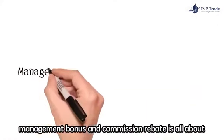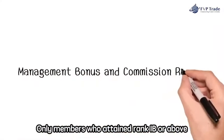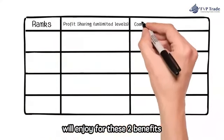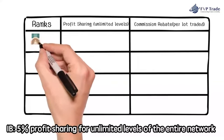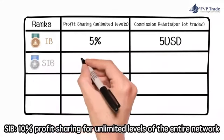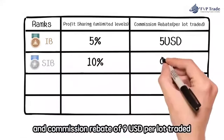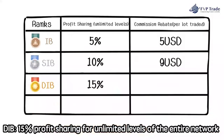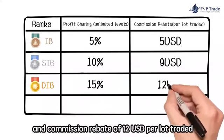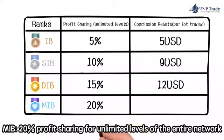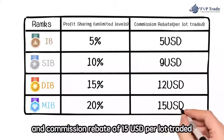Next, let's look at Management Bonus and Commission Rebate — only members who attained rank IB or above can enjoy these two benefits. IB: 5% profit sharing for unlimited levels of the entire network and USD 5 commission rebate per lot traded. SIB: 10% profit sharing for unlimited levels and USD 12 commission rebate per lot traded. MIB: 20% profit sharing for unlimited levels and USD 15 commission rebate per lot traded.